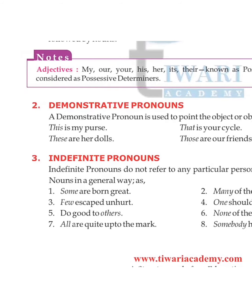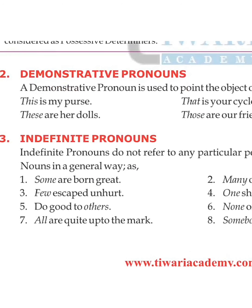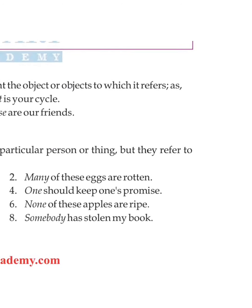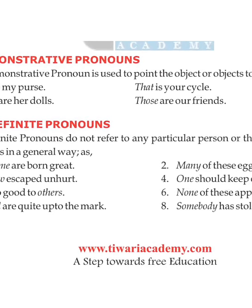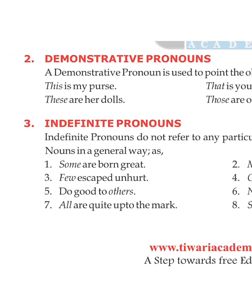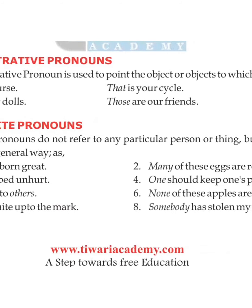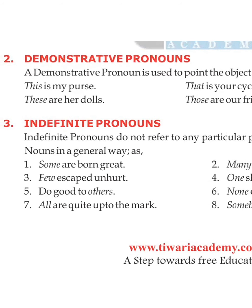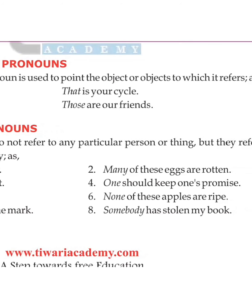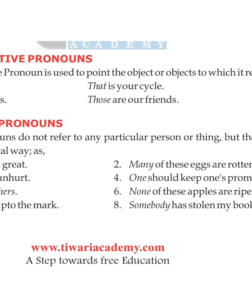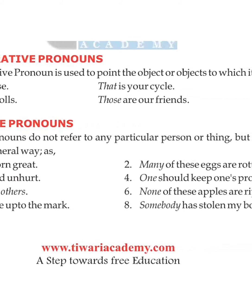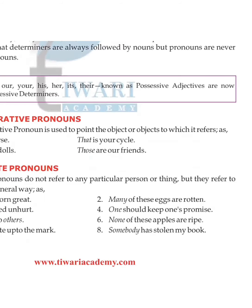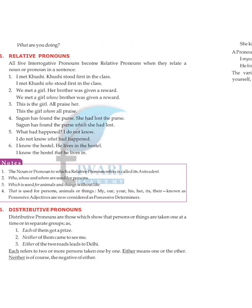Indefinite pronouns do not refer to any particular person or thing but refer to nouns in a general sense. Examples: 'Some are born great', 'Many of these eggs are rotten', 'Few except one heard', 'One should keep one's promise', 'Do good to others', 'None of these apples are ripe', 'All are quite up to the mark', 'Somebody has stolen my book'. The indefinite pronouns are: some, few, others, all, many, one, none, somebody.